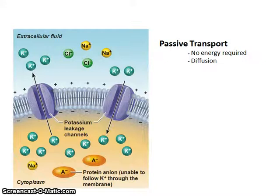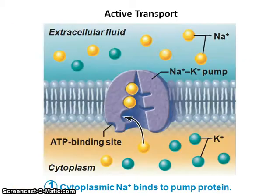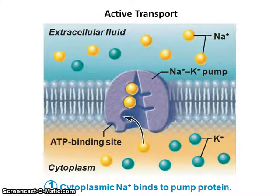So how do we get other things that don't move back and forth so easily in and out? We need to have some energy. When we use energy, it's called active transport. This is one of the most important things you'll need to know about this chapter — how to get things in and out of the cell using energy. This example is the sodium-potassium pump.